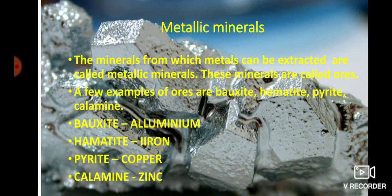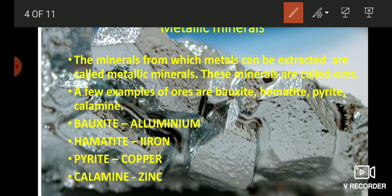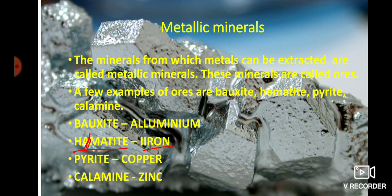From these ores, metals are extracted by different processes. From bauxite, aluminium is extracted. From hematite, iron is extracted. From pyrite, zinc is extracted. So aluminium, iron, copper, and zinc are the metals which are extracted from their particular ores. There are other ores also from which other metals are extracted.